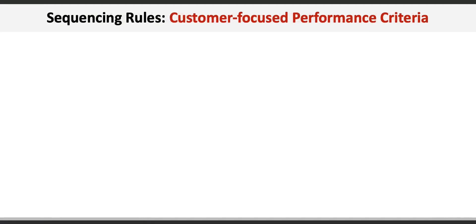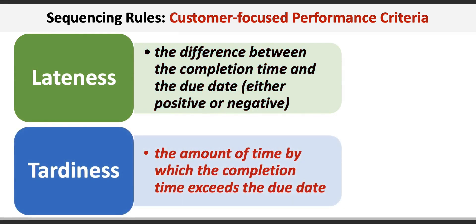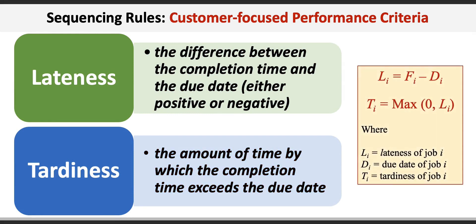Customer-based performance criteria include lateness and tardiness, or the number of jobs tardy or late. Lateness is the difference between the completion time and the due date, which can either be positive or negative. Tardiness is the amount of time by which the completion time exceeds the due date. These can be calculated using two basic formulas: lateness (li) equals fi minus di, and ti (tardiness) equals the maximum of zero or the lateness of a job.